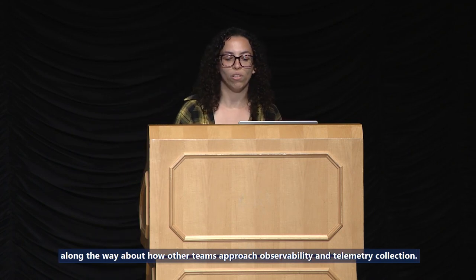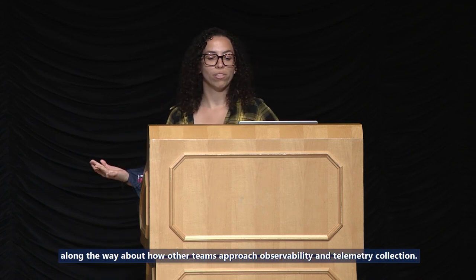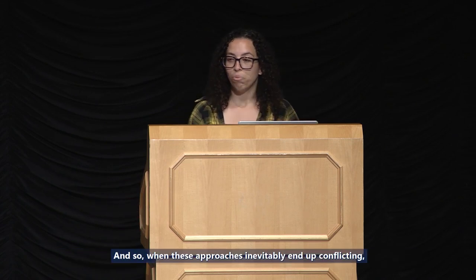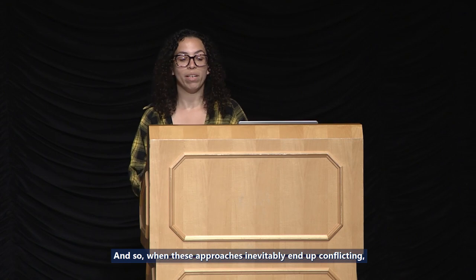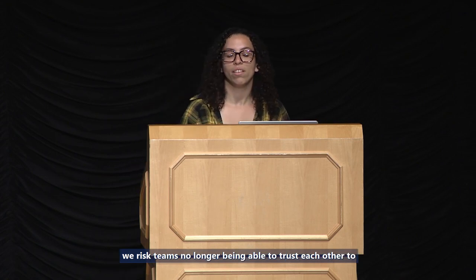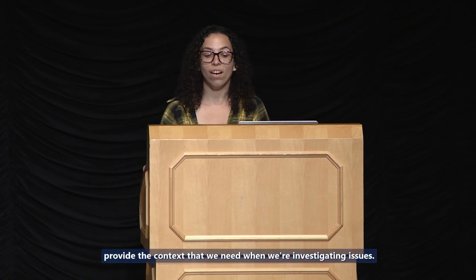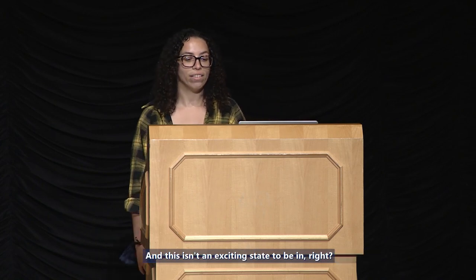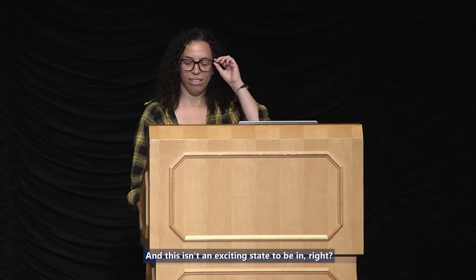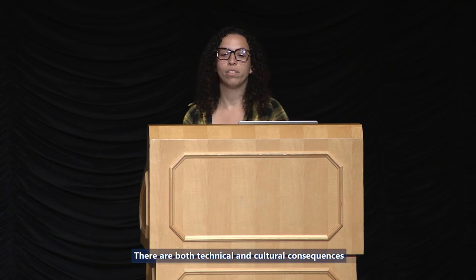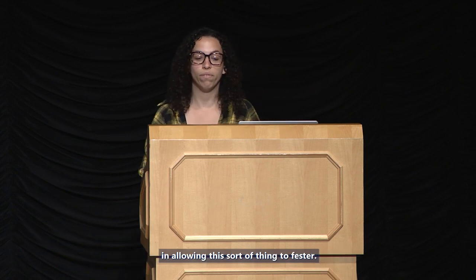The autonomy that comes with decentralization and distribution means that coordination and collaboration between teams is less necessary. The danger in this trade-off are the assumptions we end up making about how other teams approach observability and telemetry collection. When these approaches inevitably conflict, we risk teams no longer being able to trust each other to provide the context needed when investigating issues — and there are both technical and cultural consequences in allowing this to fester.